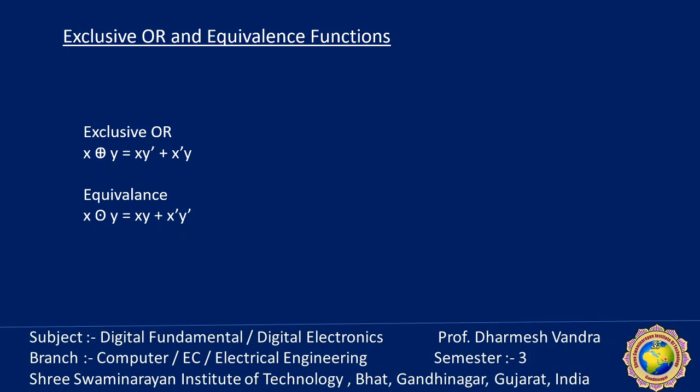Because of these two properties — commutative and associative — a function of three or more variables can be expressed without parentheses. This implies the possibility of using exclusive OR or equivalence gates with three or more inputs. However, multiple-input exclusive OR varies in economical form from a hardware standpoint, so the two-input function is usually constructed with these types of gates.